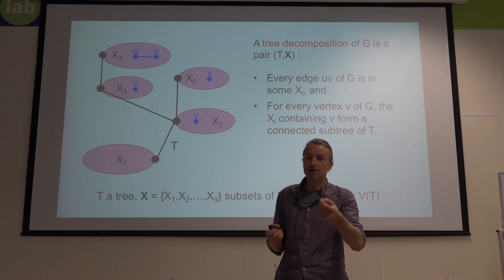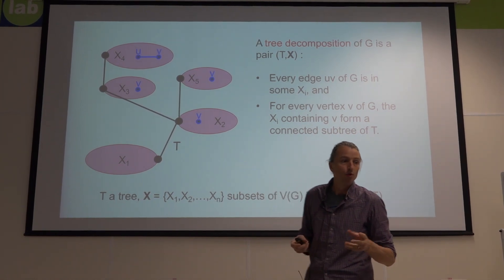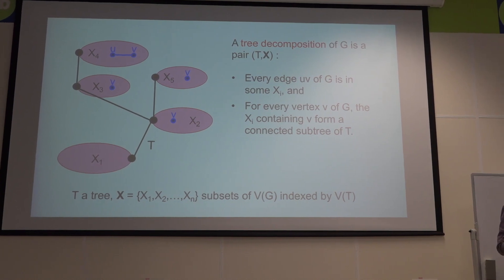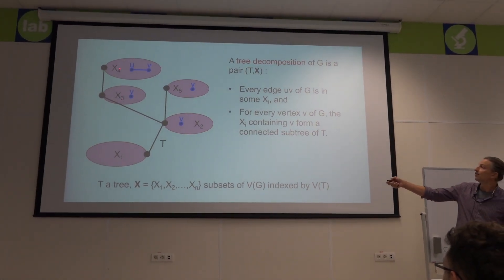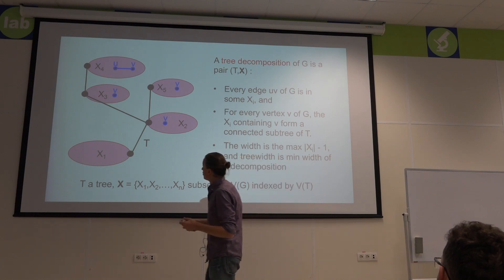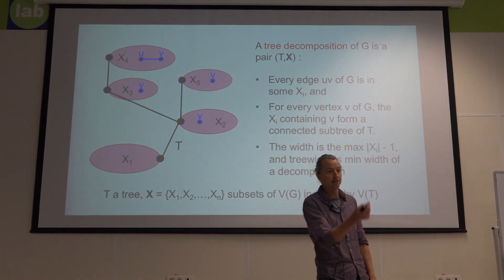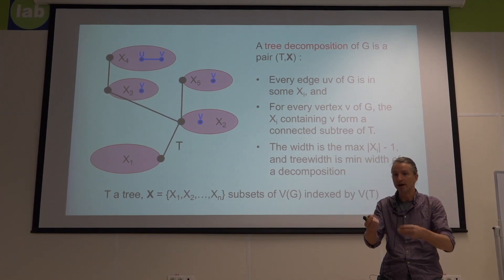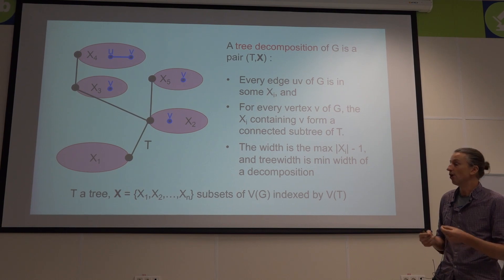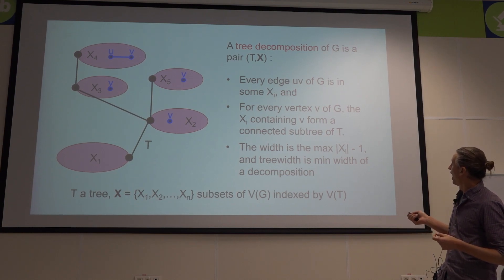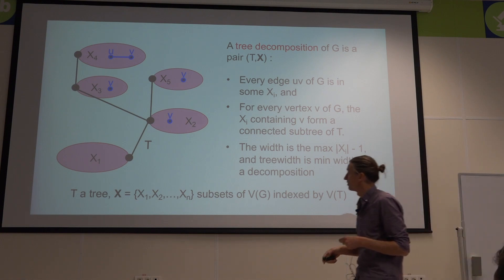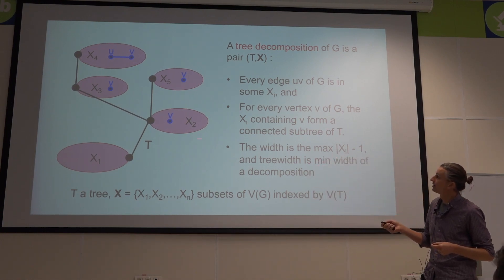Vertices are not assigned to a unique bag — they'll be in a variety of bags on the tree. The one constraint is that all the bags which contain a single vertex V must induce a connected subtree of T. Obviously, I can always find a tree decomposition by taking a trivial tree of a single vertex and putting all of G in one bag. The trick is to find one where the bags are as small as possible. Tree width is, over all possible tree decompositions, the minimum of the maximum size of a bag, minus one for historical reasons.